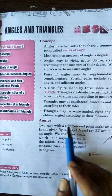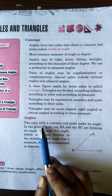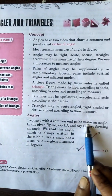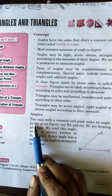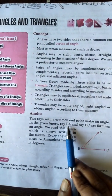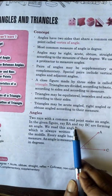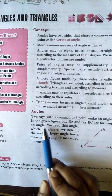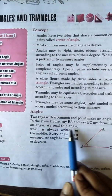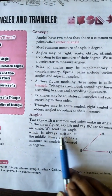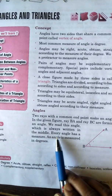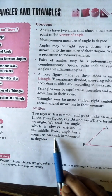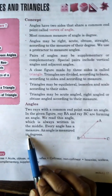What is an angle? Two rays with a common end point make an angle. In the given figure, ray BA and ray BC are forming an angle. Every angle has a measure, and an angle is measured in degrees.